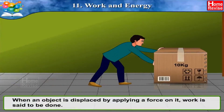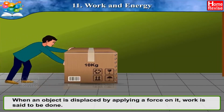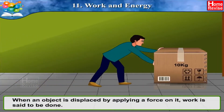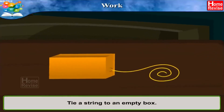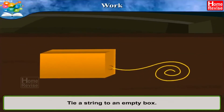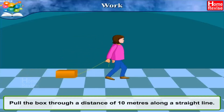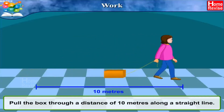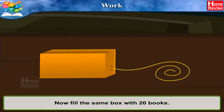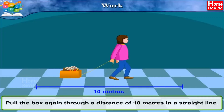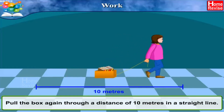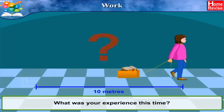When an object is displaced by applying a force on it, work is said to be done. Students, try this activity: tie a string to an empty box as shown in the picture. Pull the box through a distance of 10 meters along a straight line. Now fill the same box with 20 books and pull the box again through a distance of 10 meters in a straight line.